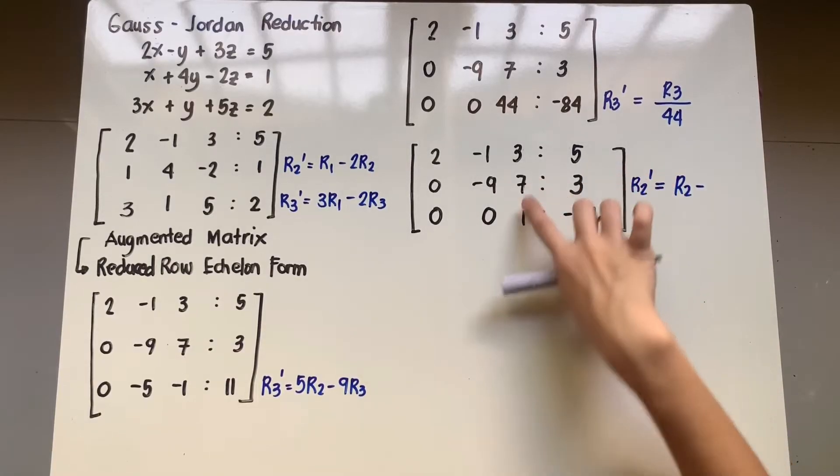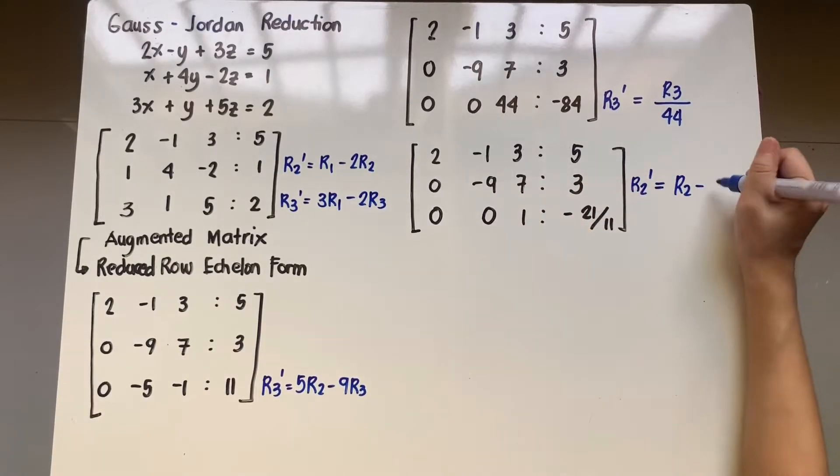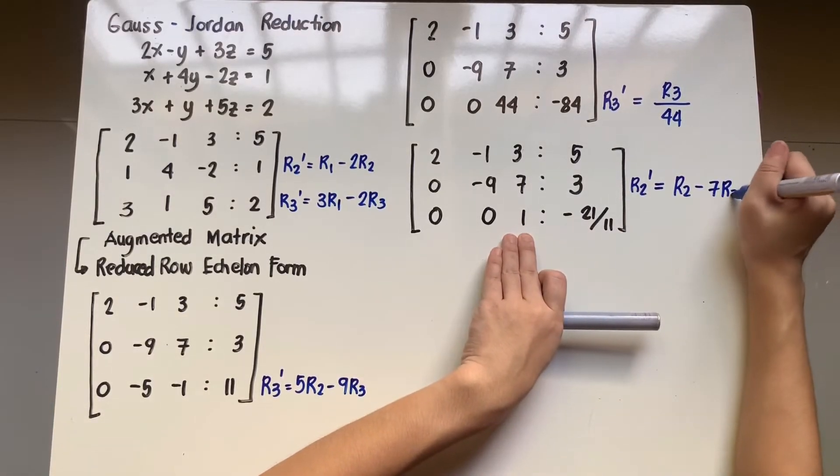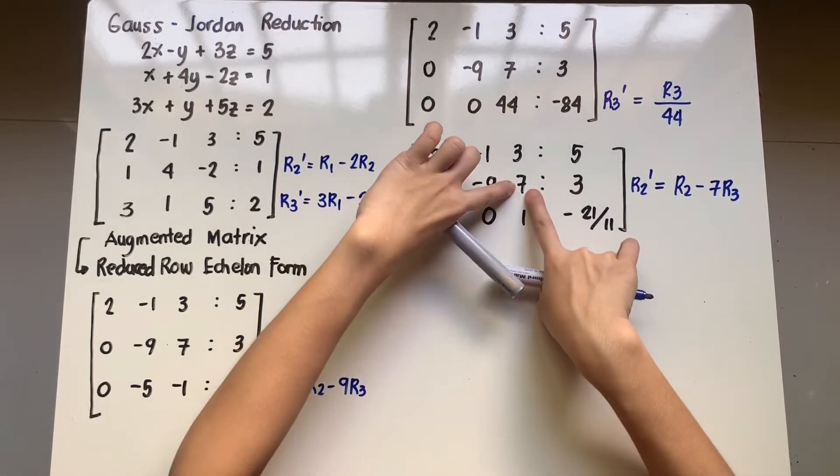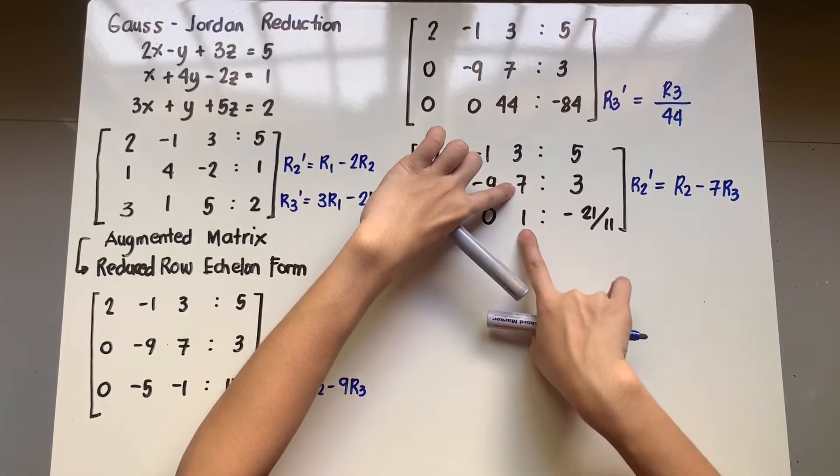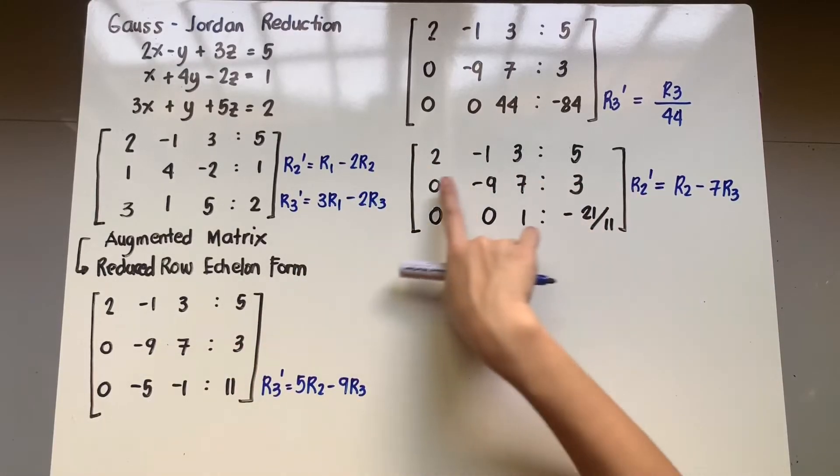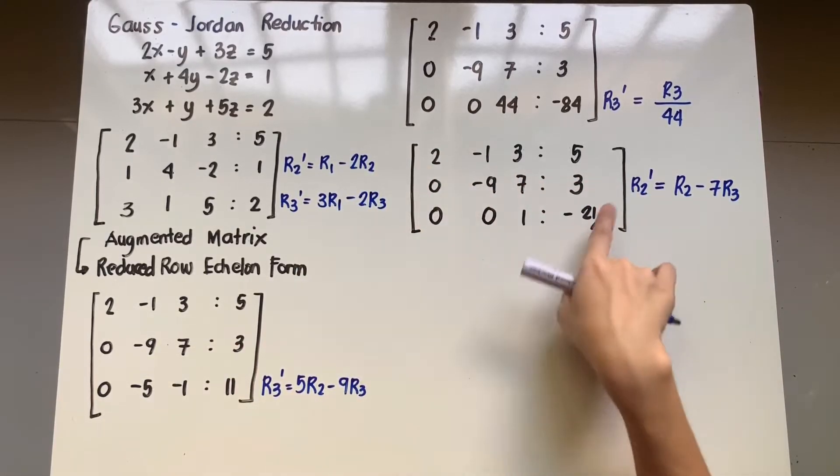So if I have the second row minus, since ito yung target ko, si 7, kailangan maging 7 ito. So I'll multiply the third row by 7 din. So I have R2 minus 7 times R3. That would be 0. And then I'll apply this to the whole row.